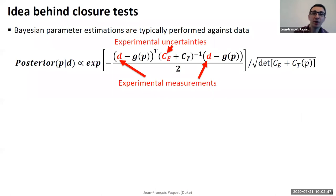So typically we'll be performing Bayesian parameter estimation directly against data because this is what you want to do. You're trying to learn about your model parameters from the data.